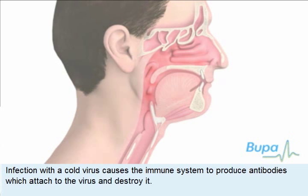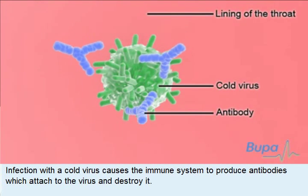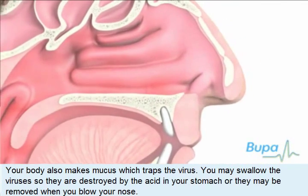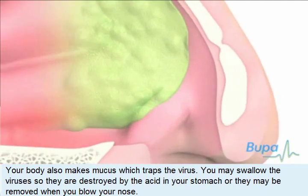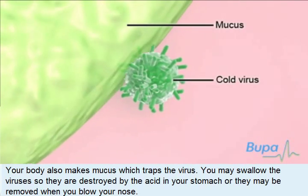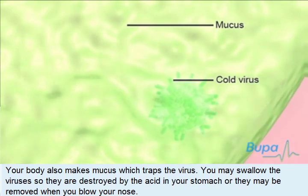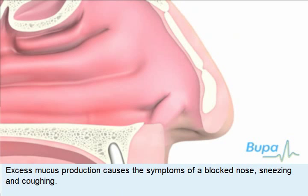Infection with a cold virus causes the immune system to produce antibodies, which attach to the virus and destroy it. Your body also makes mucus which traps the virus. You may swallow the viruses so they are destroyed by the acid in your stomach, or they may be removed when you blow your nose.